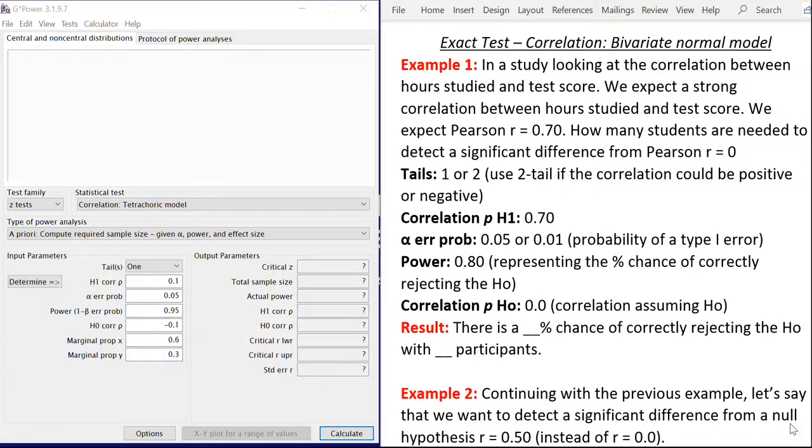Hello fellow statisticians. We are going to take a look today at how to run a G*Power sample size and power calculation for correlation. In G*Power it's called the exact test correlation bivariate normal model. This is simply saying that we are going to test the correlation between two variables.